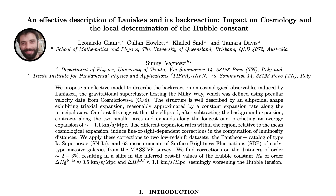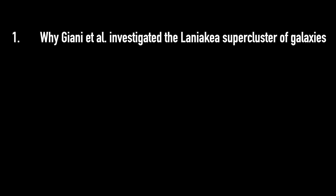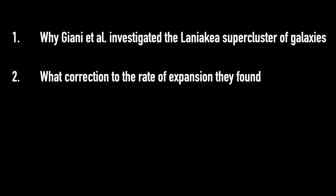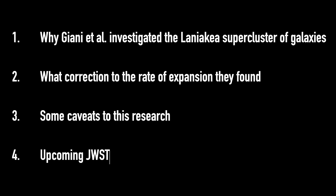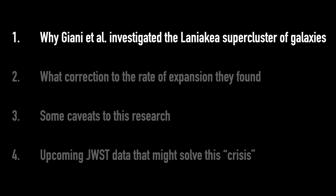It was this second option that this paper by Gianni and collaborators was investigating by studying the Laniakea supercluster of galaxies. But they actually made the whole problem worse, concluding that those two values should actually be further apart if you take into account the Laniakea supercluster when you calculate the expansion rate of the universe. In this video, we'll chat first about why Gianni and collaborators decided to investigate Laniakea, second what corrections were made and why results made the tension worse, third some caveats, and finally how new JWST data coming very soon might help solve this problem.